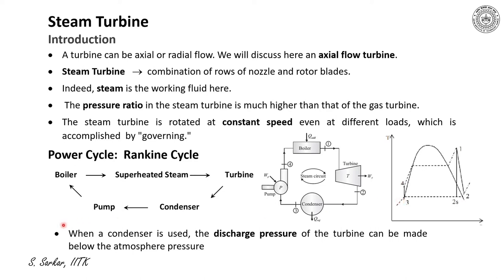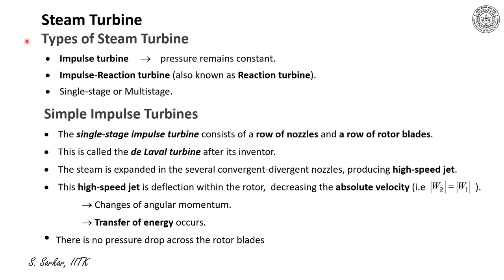Now, if the condenser is used, the discharge pressure of a turbine can be made below atmospheric pressure, and thereby we can increase the work output by decreasing the discharge pressure. I'd like to mention here about the types of steam turbine. I have already discussed about impulse and reaction turbines while presenting the chapter on gas turbine. However, let me discuss again for sake of completion.